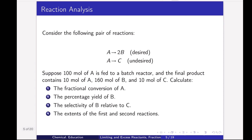Now I am solving one numerical problem — reaction analysis. Consider the following pair of reactions: A converts to 2B (desired product) and a side reaction A converts to C (undesired product). Suppose 100 moles of A is fed to a batch reactor and the final product contains 10 moles of A, 160 moles of B and 10 moles of C. Calculate: the fractional conversion of A, the percentage yield of B, the selectivity of B relative to C, and the extent of the first and second reaction.